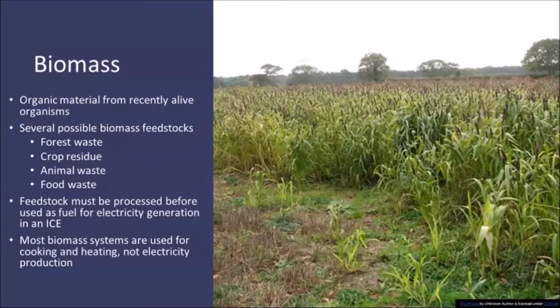Gensets can be fueled with biomass more generally. Biomass is distinguished from fossil fuels in that the organic material was recently alive. When we think about biomass, we think of crop residue, animal waste, animal manure, food and human waste, and forest products. These are all different biomass feedstocks. We can't just feed crops directly into an internal combustion engine — we have to process it into a more convenient fuel. Most biomass systems out there aren't used for electricity generation but rather for heating and cooking, though there are many examples where biomass is used as a feedstock to a generator to produce electricity.